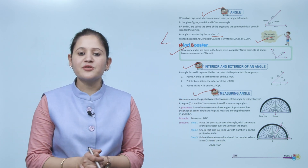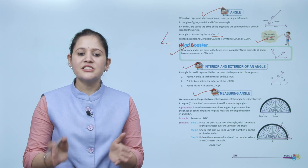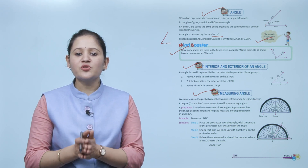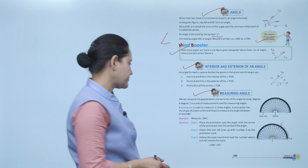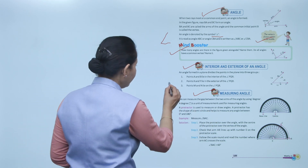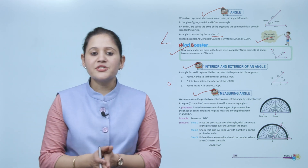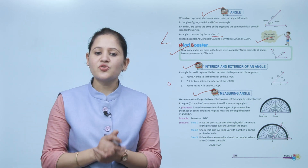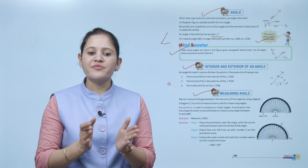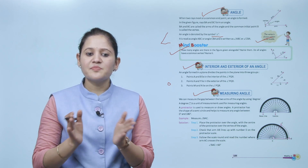We can measure the gap between the two arms of an angle using degrees. A degree is the unit used for measuring angles. A protractor is used to measure and draw angles. The protractor has the shape of a semicircle and helps us measure any angle between 0 degrees and 180 degrees.